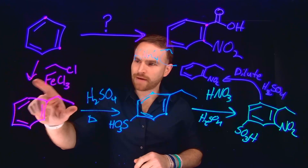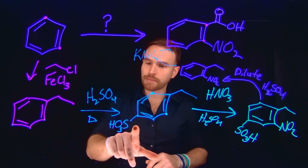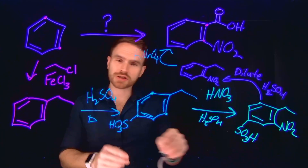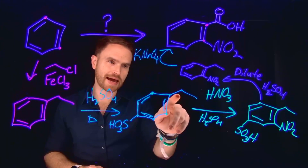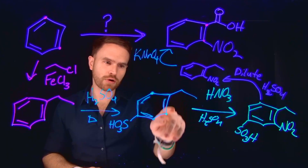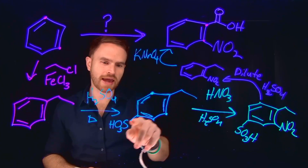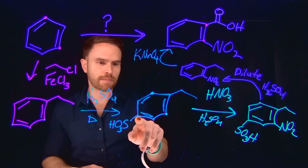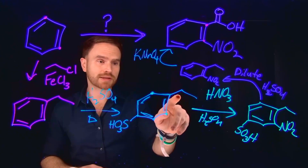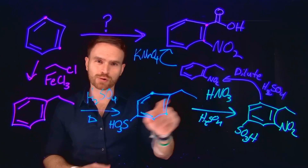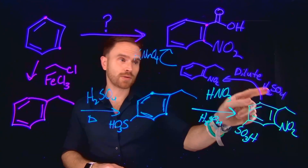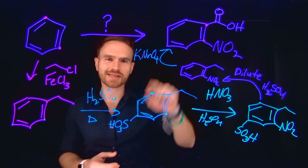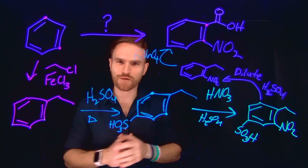To summarize: the first step was Friedel-Crafts alkylation, followed by blocking the para position with a sulfonation reaction, followed by nitration directed to the ortho position of the alkyl chain — because the ortho-para directing alkyl group and the meta-directing sulfonate both direct toward the exact same position. We then removed the sulfonate with dilute sulfuric acid and oxidized the alkyl chain to a carboxylic acid with potassium permanganate to give the final product.